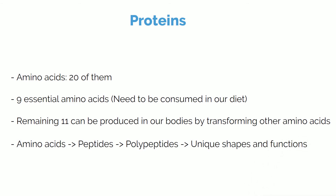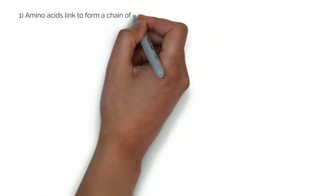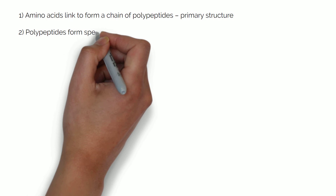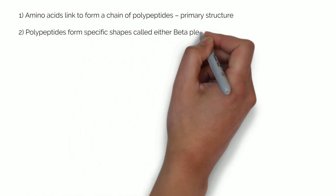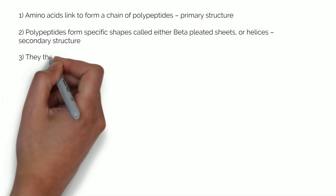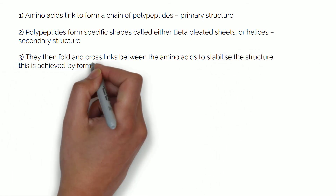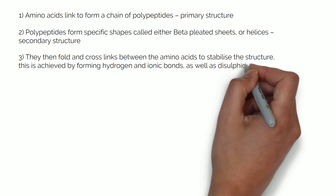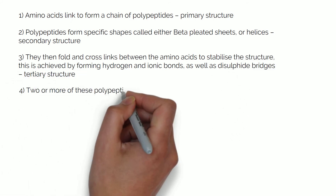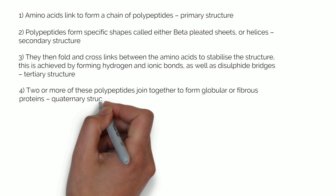Let's take a look at the chain of events that allows proteins to have such complex shapes. First, the amino acids link to form a chain of polypeptides — this is called the primary structure. Then, the polypeptides form specific shapes called either beta-pleated sheets or helices — this is the secondary structure. Then, they fold and cross-link between the amino acids to stabilize the structure, achieved by forming hydrogen and ionic bonds as well as disulfide bridges — this is the tertiary structure. Finally, two or more of these polypeptides join together to form globular or fibrous proteins — this is the quaternary structure.